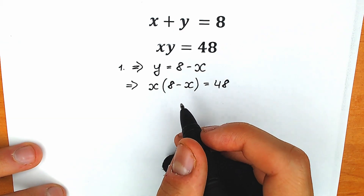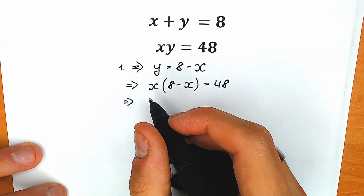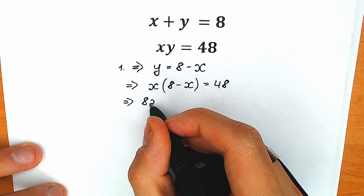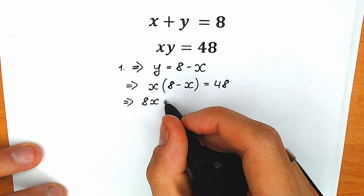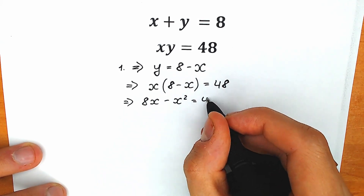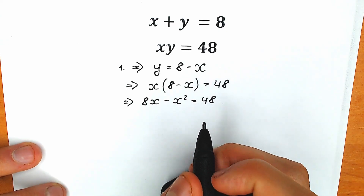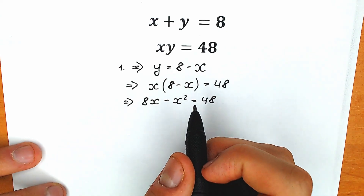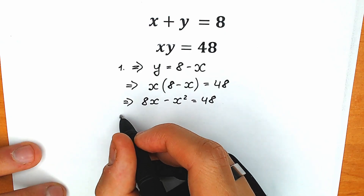Let's solve our equation. First of all, let's multiply x by this parenthesis. So we have 8x minus x squared equal to 48. Right now let's rearrange the order a little bit, because this is a quadratic equation — we can easily see that.